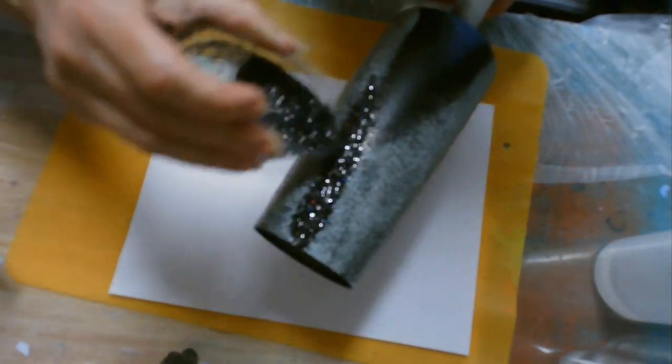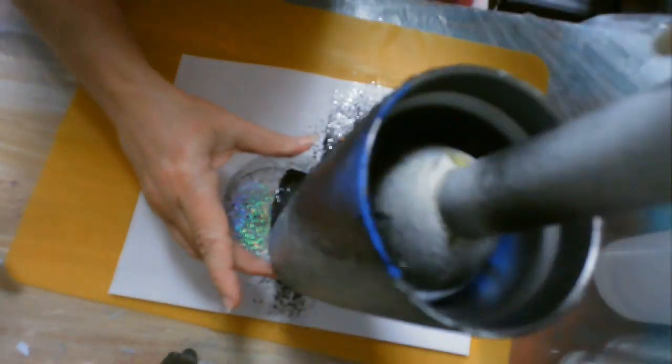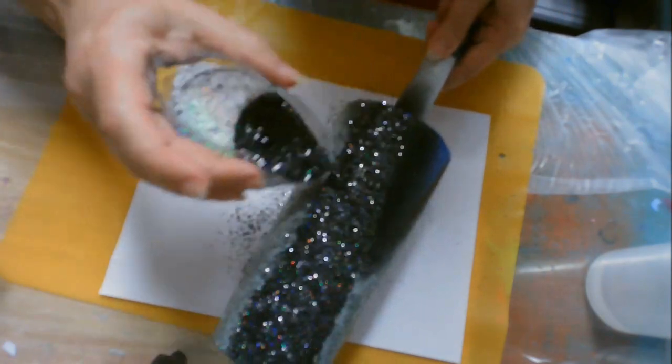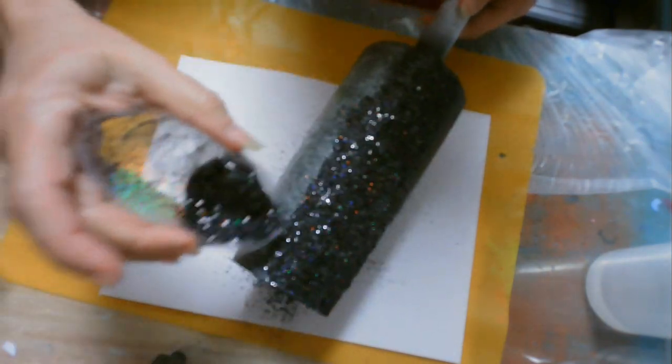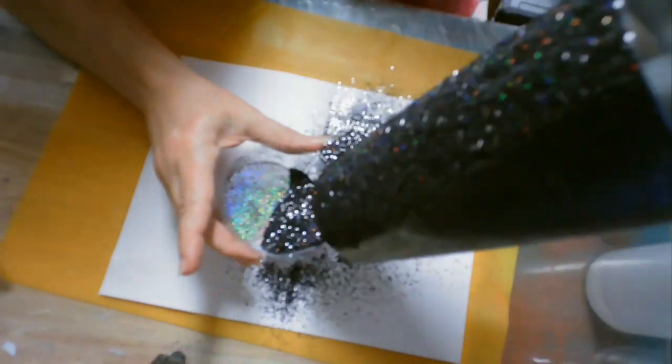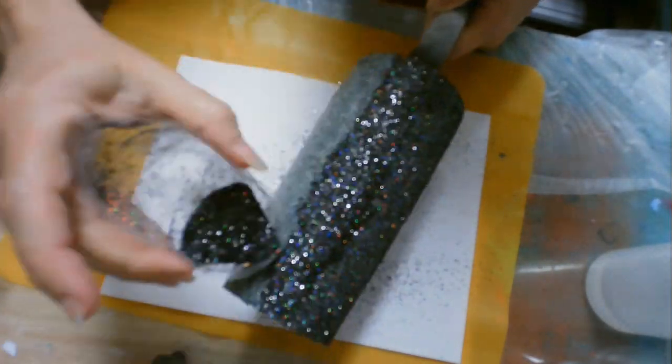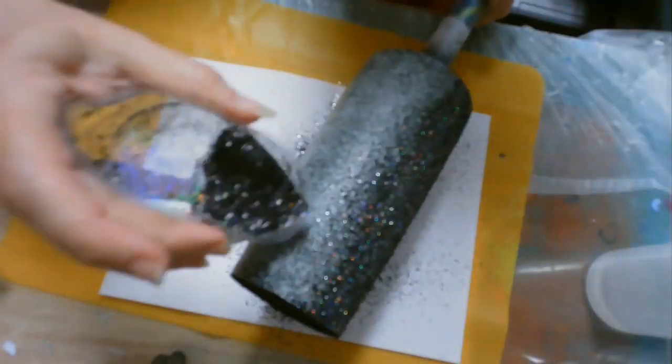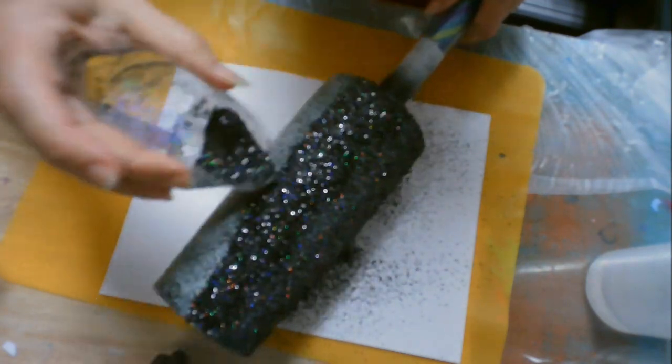And here I'm going to add the top layer of the glitter and I'm not going to press this one down. I'm going to let it set for a couple hours and then spray it again with some matte spray paint or spray sealer, I should say.